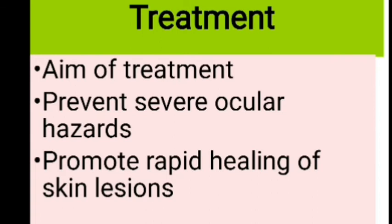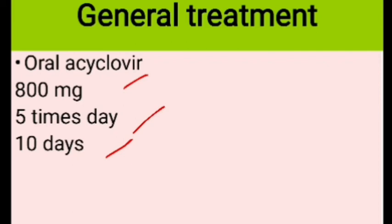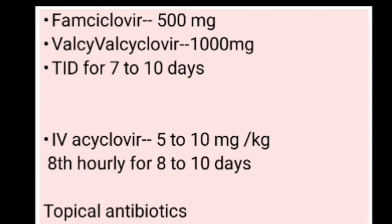The aim of treatment is to prevent severe ocular hazards and promote rapid healing of skin lesions to avoid severe trigeminal neuralgia. General treatment includes oral acyclovir 800 mg five times a day for 10 days, preferably started within 72 hours of onset to prevent post-herpetic neuralgia. Famciclovir 500 mg and valacyclovir 1000 mg are both given three times a day for 7 to 10 days.